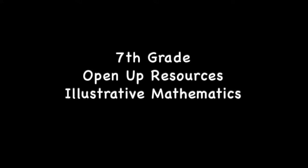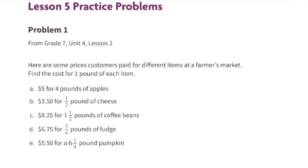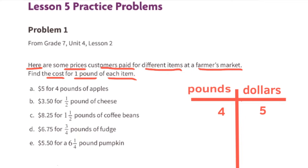Seventh grade Open Up Resources Illustrative Mathematics, unit six lesson five: reasoning about equations and tape diagrams, part two. Problem number one from seventh grade unit four lesson two. Here are some prices customers paid for different items at a farmers market. Find the cost for one pound of each item.